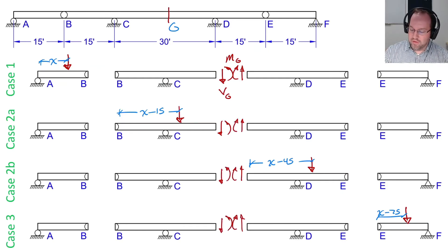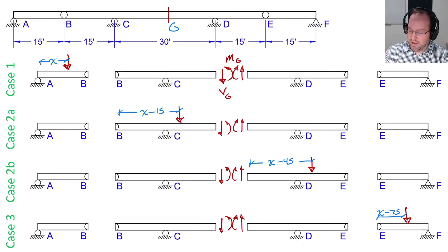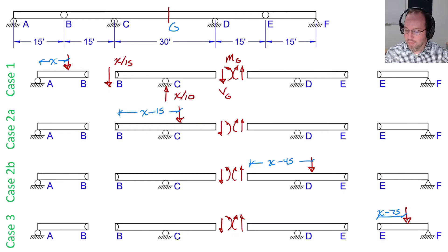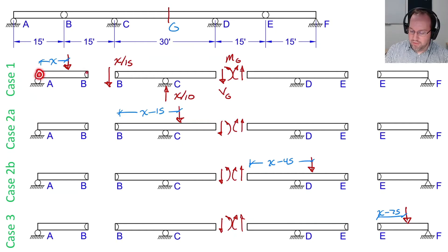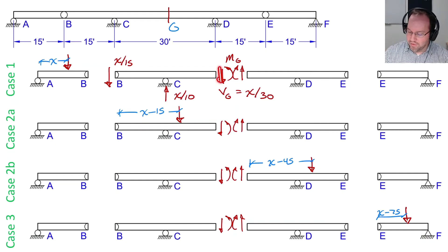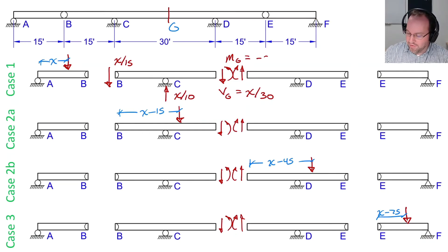So if I'm looking at case one, to solve for VG and MG — shear and moment at G — I really only need to look at the free body diagram between C and G. I already know my shear at B was X over 15 acting down, and my reaction force at C was X over 10 acting up. Those were taken from case one, when my load was located between 0 and 15 feet. Given that we know this is X over 15 down and X over 10 up, we can solve for the shear at location G. It is equal to X over 30, acting down on this side and up on the opposite side — that is a positive shear. And taking a sum of moments, the moment at G is negative X over two.